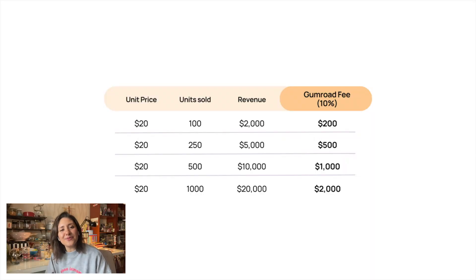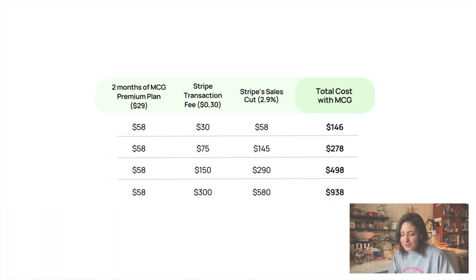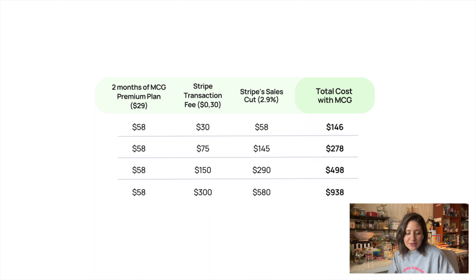Let's say the price of our product is $20. If you are selling from 100 to 1,000 units over a two-month period, here is the revenue on Gumroad, and here is the Gumroad commission fee at 10% of revenue. Two months of MiniCourseGenerator premium plan will cost you $58, plus Stripe's transaction fee and commission cut. Total costs with MiniCourseGenerator will vary from $146 to $938.